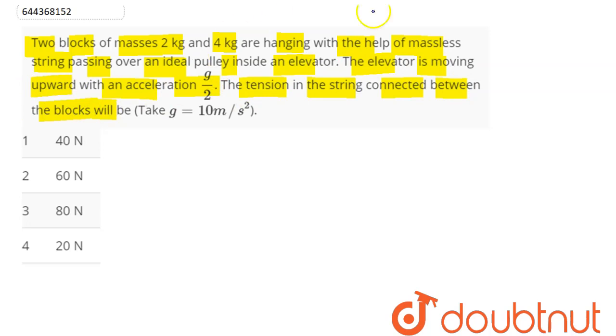The tension in the string connected between the blocks will be... So here we have, suppose this is our elevator which is accelerating upward. And here, this is our pulley, and with this pulley there are two strings attached, and with these strings there are two masses hung from this.